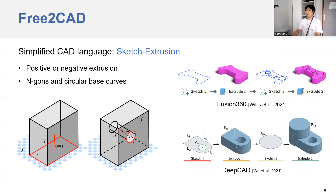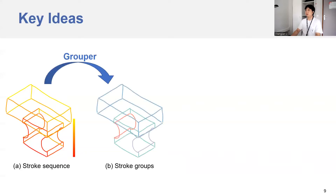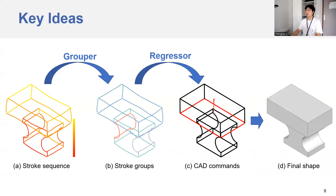So, how to achieve our goal? Let me introduce our key idea. We allow users to input the stroke sequence representing the shape, where the color coding indicates they draw in order from red to yellow. If users do not mentally decompose the shape, our algorithm must take this job. So we are wondering if there is a grouper that can decompose the strokes into geometric parts, and for each part, if there is a regressor to find the correct CAD commands — then finally we will get the desired CAD shape reproducing the inputs. Basically, the grouper and the regressor are the two main components of our algorithm.